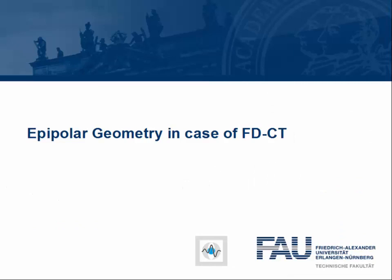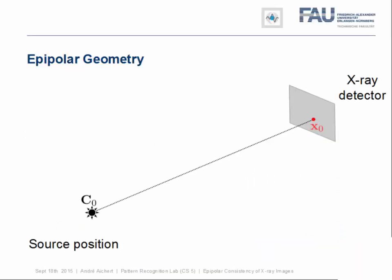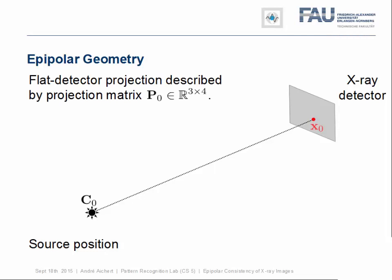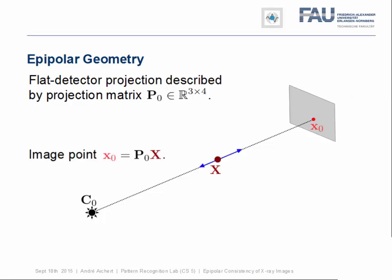Epipolar geometry in case of flat-panel detector computer tomography. Consider an X-ray imaging setup such as this, for example, of an interventional C-arm, with an X-ray source located in the point C0, shown on the left, and a flat-panel detector shown in gray on the right. Observe that the same pinhole camera model applies to both X-ray imaging and photo cameras alike. It can be fully described by a single projection matrix P0, which is a 3x4 matrix up to scale. Projection is then simply described by matrix multiplication of a world point X with a projection matrix P0 to get the pixel coordinates of an image point X0 on the detector.